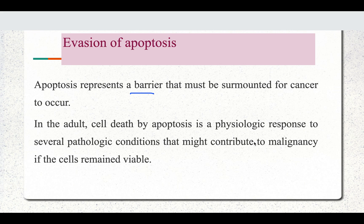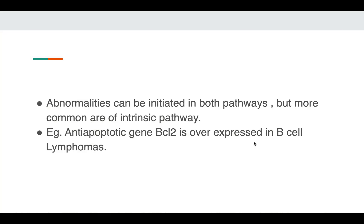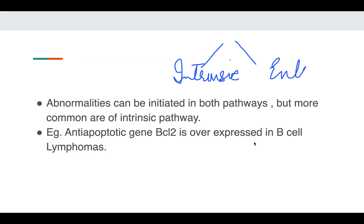In a normal cell, cell death by apoptosis takes place and prevents pathological conditions. There are two pathways in apoptosis. There is the intrinsic pathway, also known as the mitochondrial pathway, and there is the extrinsic pathway. In case of evasion of apoptosis, most common defects are seen in the intrinsic pathway, that is the mitochondrial pathway.